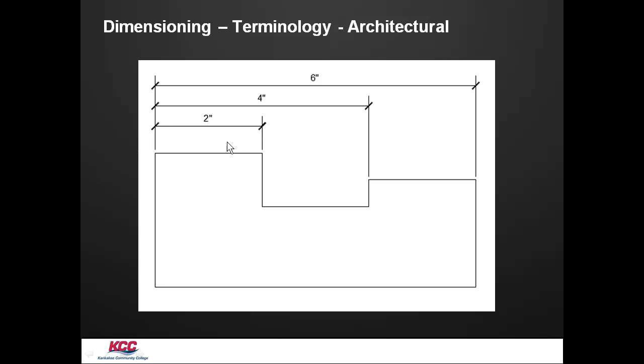Now, in architecture, they place the value of the dimension above the dimension line. They also use an architectural tick, which is this 45 degree in place of the arrowhead. And they use it aligned as well.